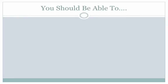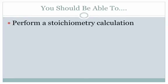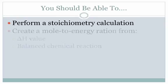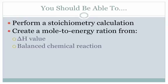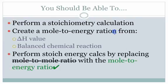Let's wrap up with what you should now be able to do. First, you should be able to perform a stoichiometry calculation — today has hopefully reminded you how this process works. You should now be able to create a mole-to-energy ratio from the delta H values and the balanced chemical reaction. Finally, you should be able to perform stoichiometry energy calculations by replacing the mole-to-mole ratio with the new mole-to-energy ratio. In class, we'll practice these in more detail. The thing to always remember is that this is the same process — we've just got a new conversion factor introduced to the same format.